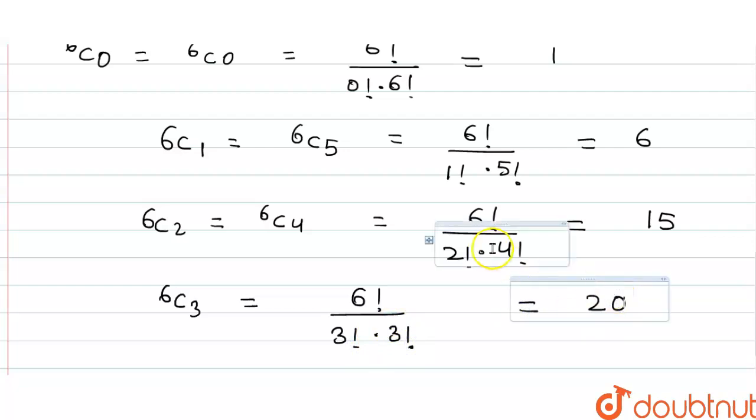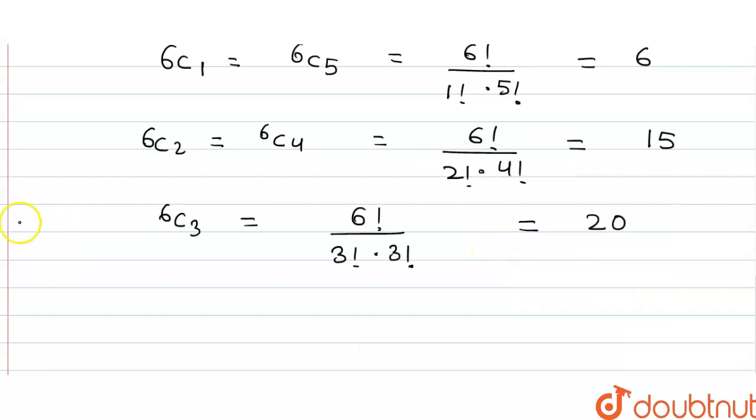So the value of 6C3 is maximum. This is the maximum value. Therefore, X equals 3, that is P(X=3) is maximum. Thus, X equals 3 is the most likely outcome.